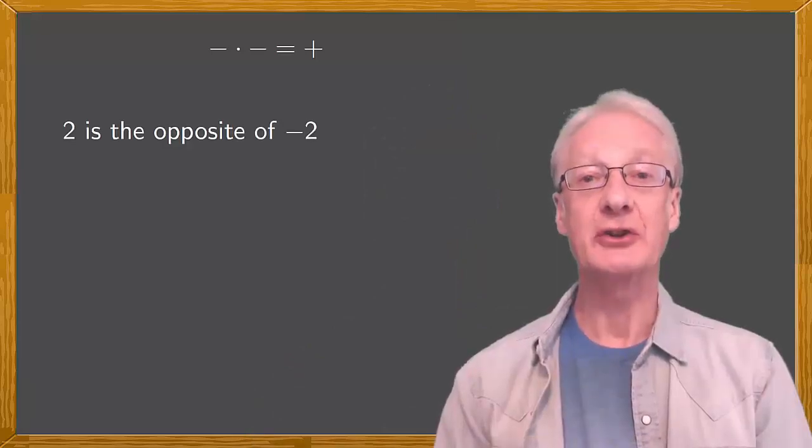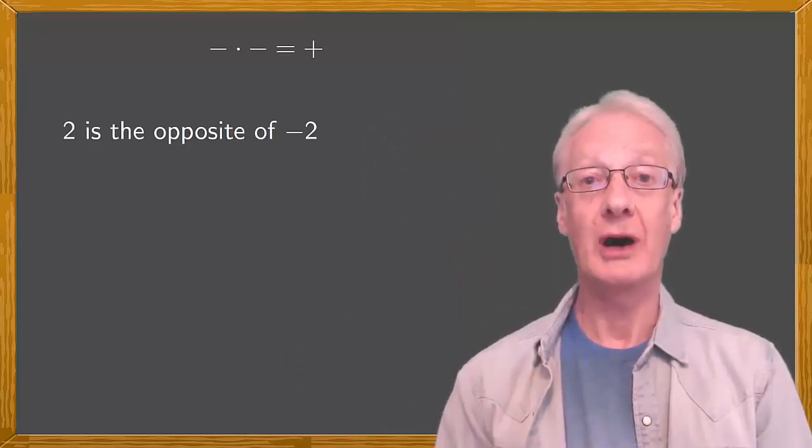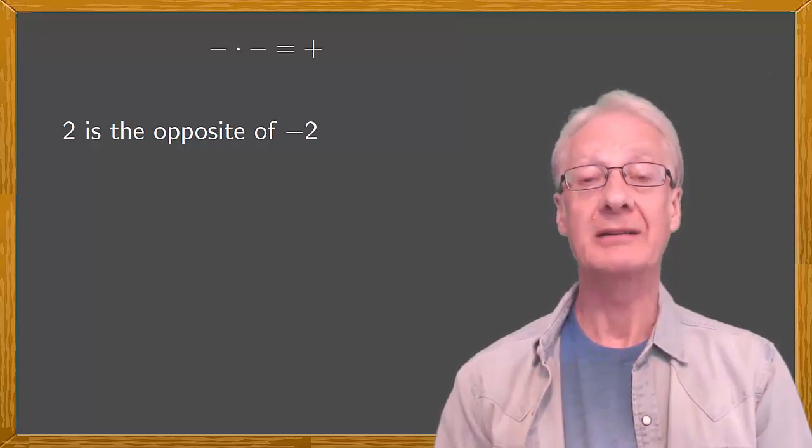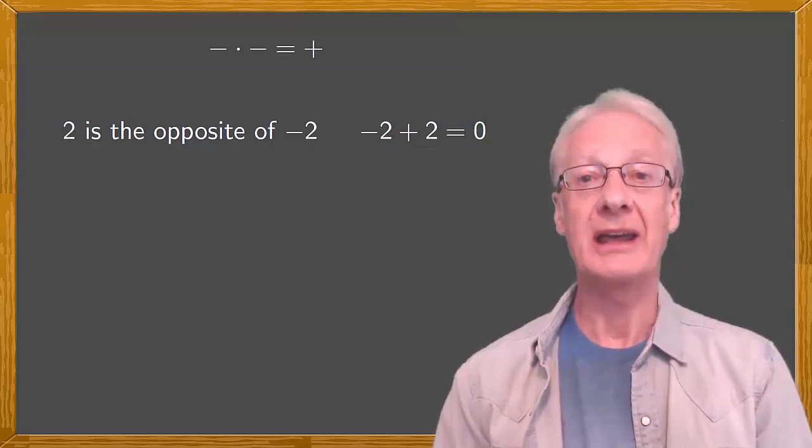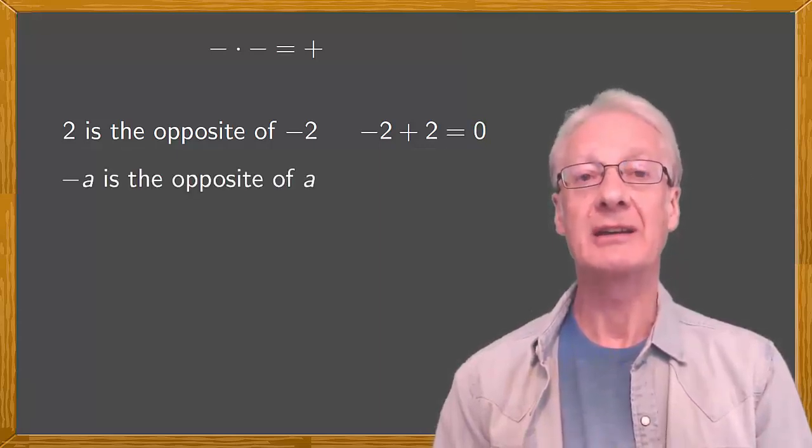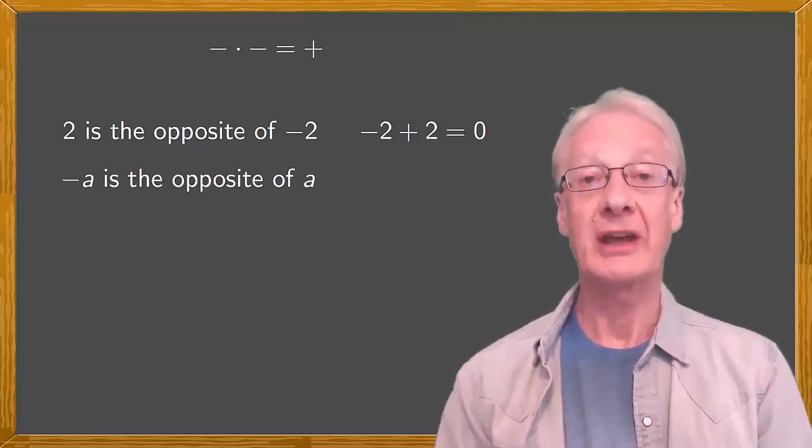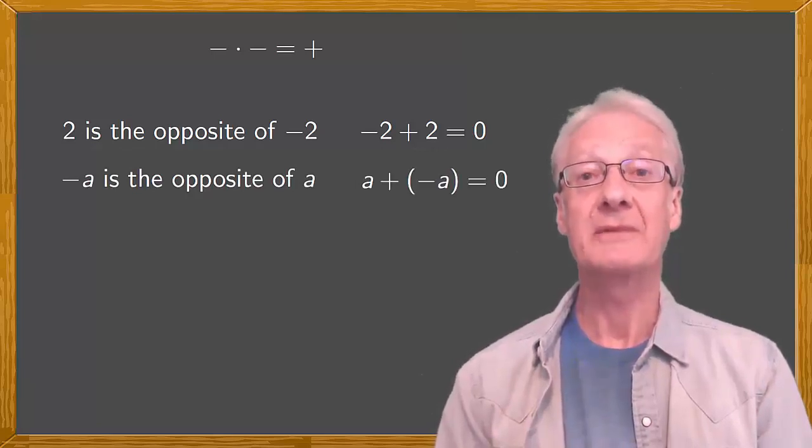Let's start with a gentle warm-up. Think about the opposite of a number in terms of its sign. The opposite of negative 2 is 2. Why? Because if you add negative 2 and 2, you get 0, the neutral element. And in general, if you have any number a, then negative a is the opposite. Because a plus negative a is 0.